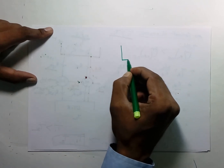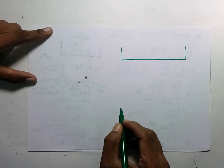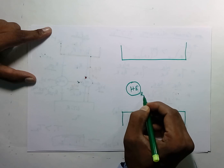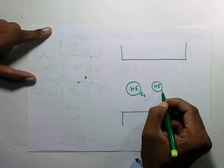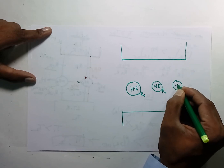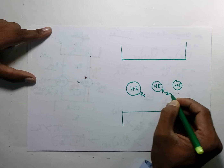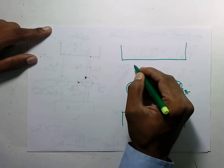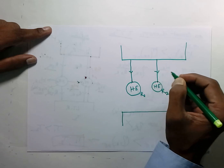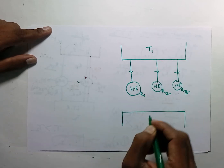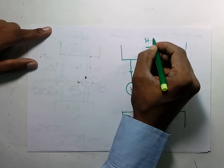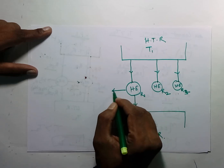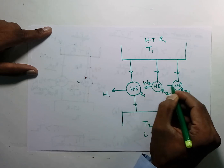The second statement of Carnot Theorem states that if you have more than one reversible heat engine — say R1, R2, R3 — operating between two temperature limits T1 and T2, where T1 is the high temperature reservoir and T2 is the low temperature reservoir, and they are providing work W1, W2, W3 respectively, then their efficiencies will all be equal.